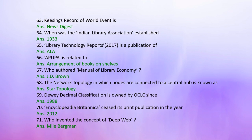Question 65: Library Technology Report 2017 is a publication of — Answer: ALA. Question 66: APUPA is related to arrangement of books on shelves. Question 67: Who authored Manual of Library Economy? Answer: J.D. Brown. Question 68: The network topology in which nodes are connected to a central hub is known as — Answer: Star topology. Question 69: Dewey Decimal Classification is owned by OCLC since — Answer: 1988.